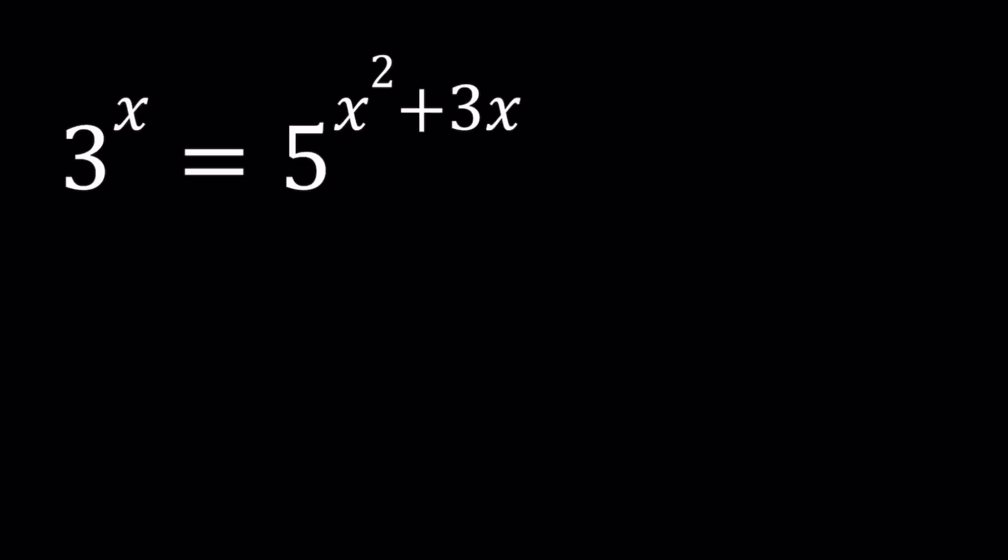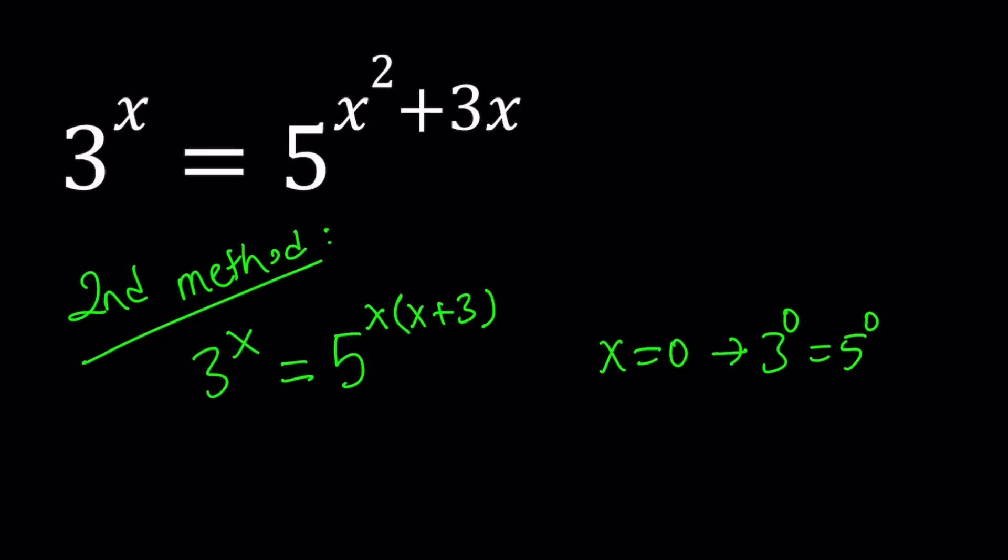Let's start with the second method. For my second method, I'm going to factor the exponent of the second one. So I'm going to write this as 5^(x(x+3)). Here, I think it's kind of easy to see that x equals 0 will be a solution. Because if x is equal to 0, then we get 3^0 = 5^0, which is of course true, right? Because they're both equal to 1.